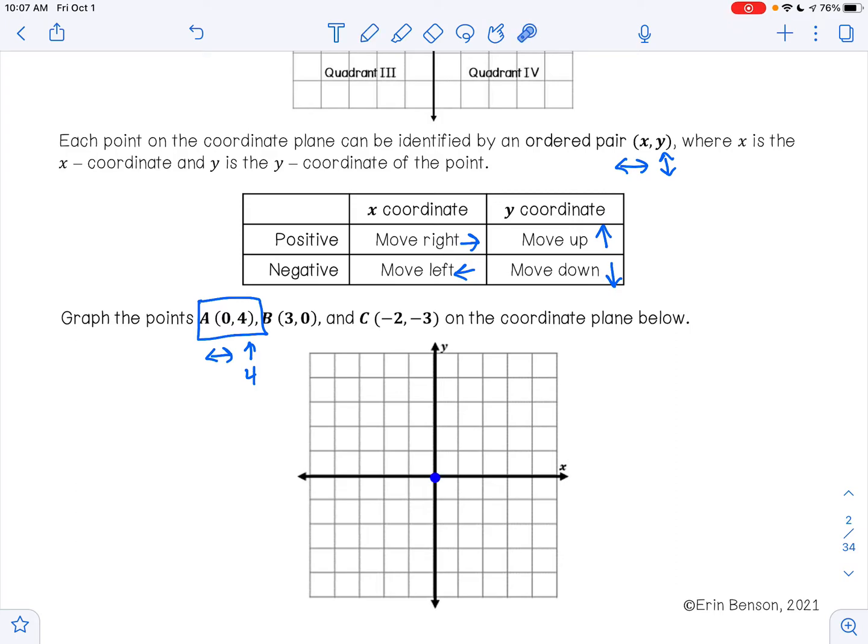If I'm on my origin, this is where you always start. You go 0 left to right, and then we're going to go up 1, 2, 3, 4. So put a big dot right there, and you want to label that dot A. This is the point (0, 4).